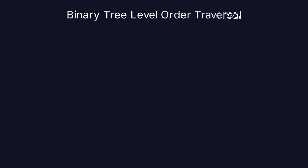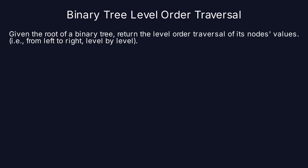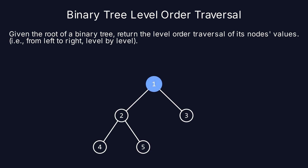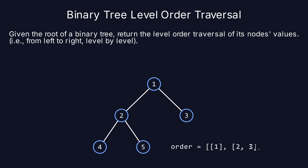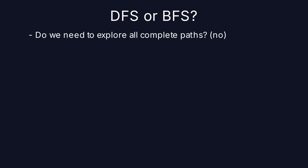The second problem is binary tree level order traversal. This problem asks us to return the level order traversal of a binary tree's node values, meaning we need to traverse the tree level by level starting from the root and return the values of nodes at each level in a list of lists. This involves visiting all nodes at depth 1, then all nodes at depth 2, and so on, until all levels of the tree have been traversed. We know this is also a tree problem, so it will use either DFS or BFS.